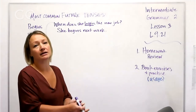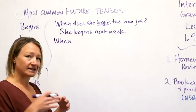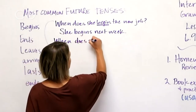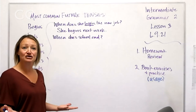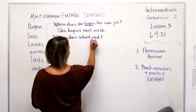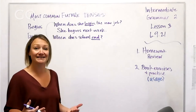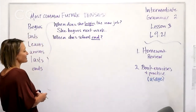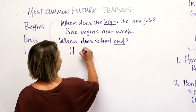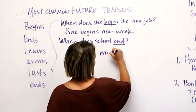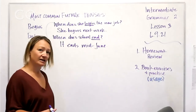Notice these are all about times, meaning schedules. Here's a typical question: 'When does school end?' — 'to end' is our verb here. And we can say 'it,' referring to school: 'It ends mid-June,' meaning in the middle of June. We can shorten that and say 'mid-June.'